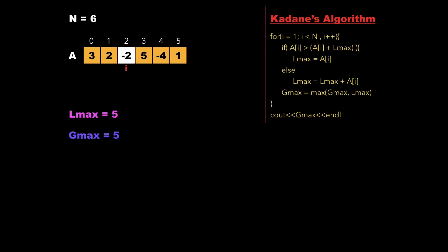Now i points to the value -2 and we check whether -2 is greater than -2 + lmax, that is whether -2 is greater than 3. Since -2 is less than 3, we update lmax as lmax + a[i]. The value of a[i] was -2, so the updated lmax will be 5 - 2 = 3. Since lmax is not greater than gmax, gmax remains as it is and we increment i.